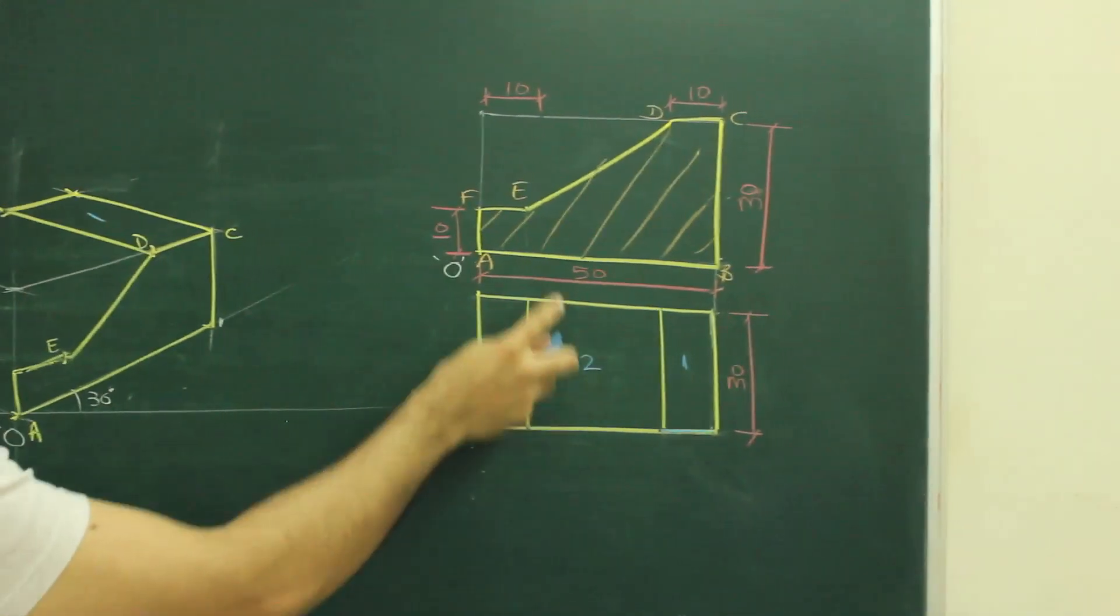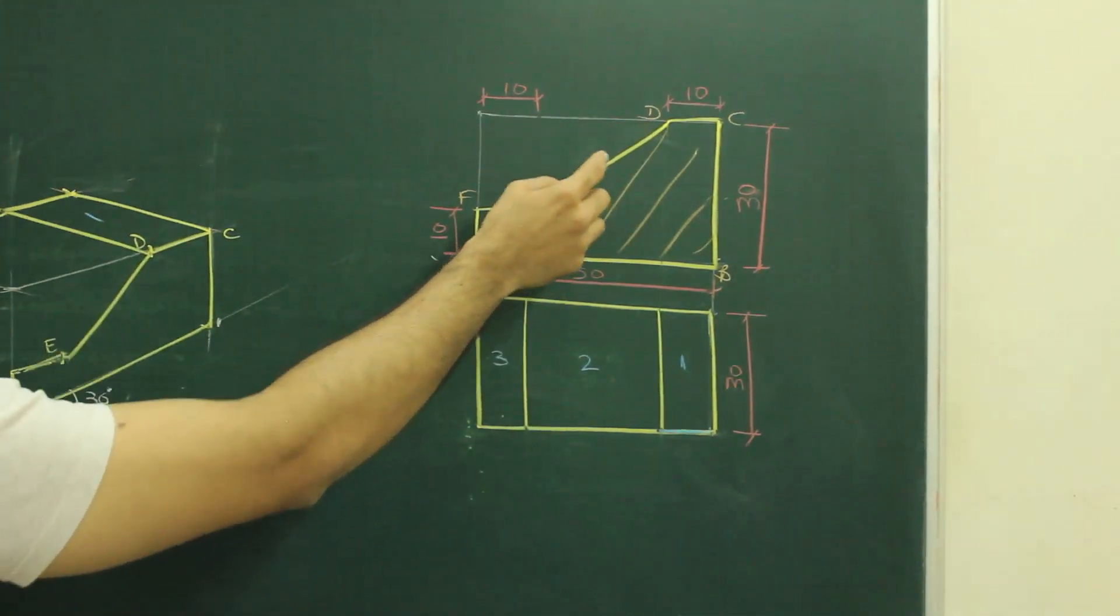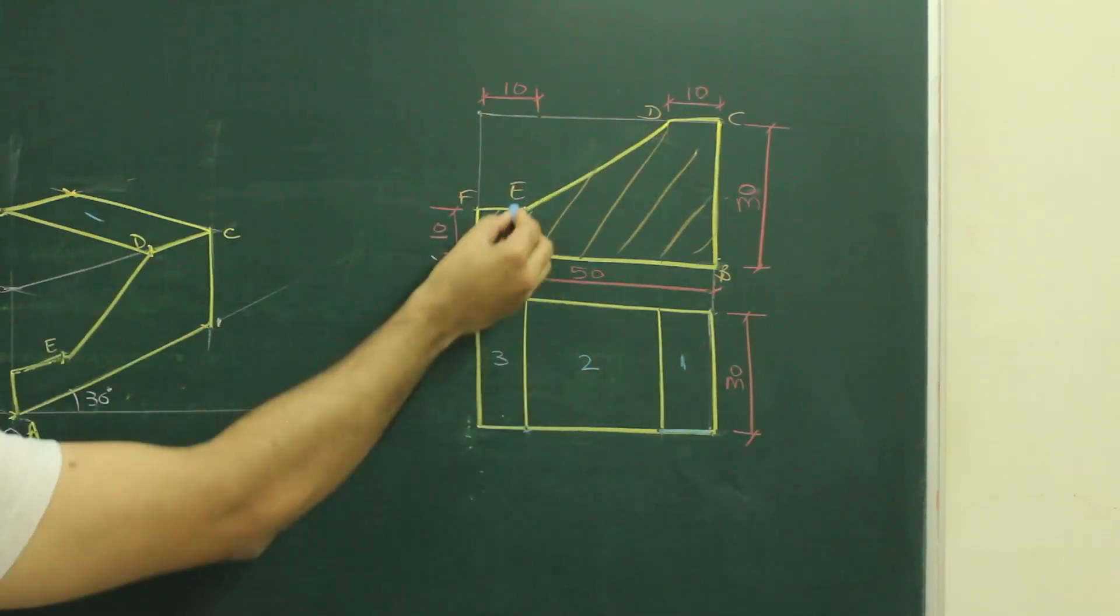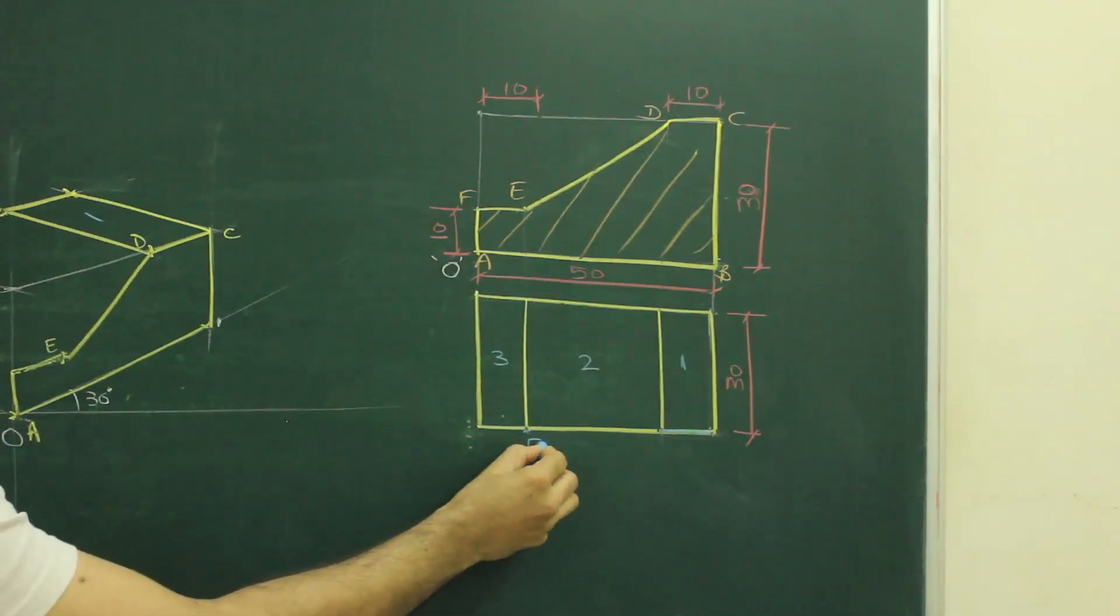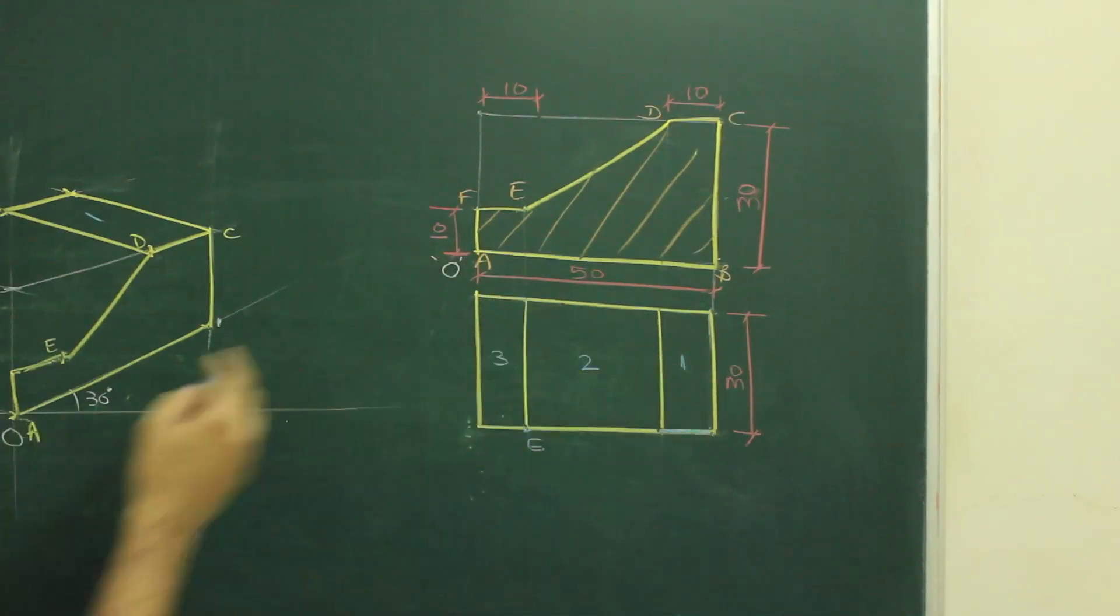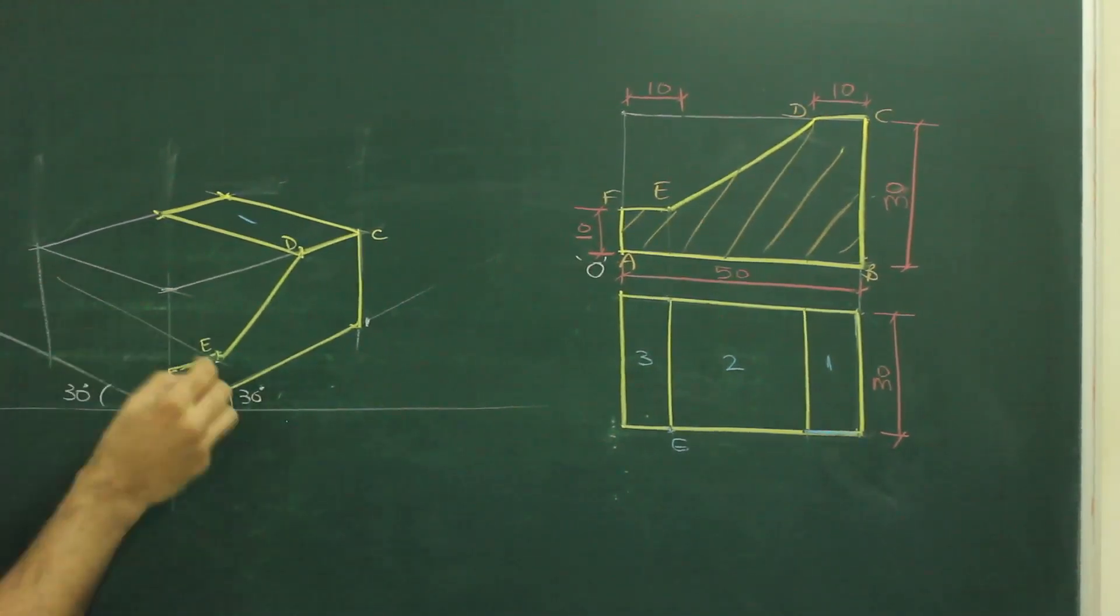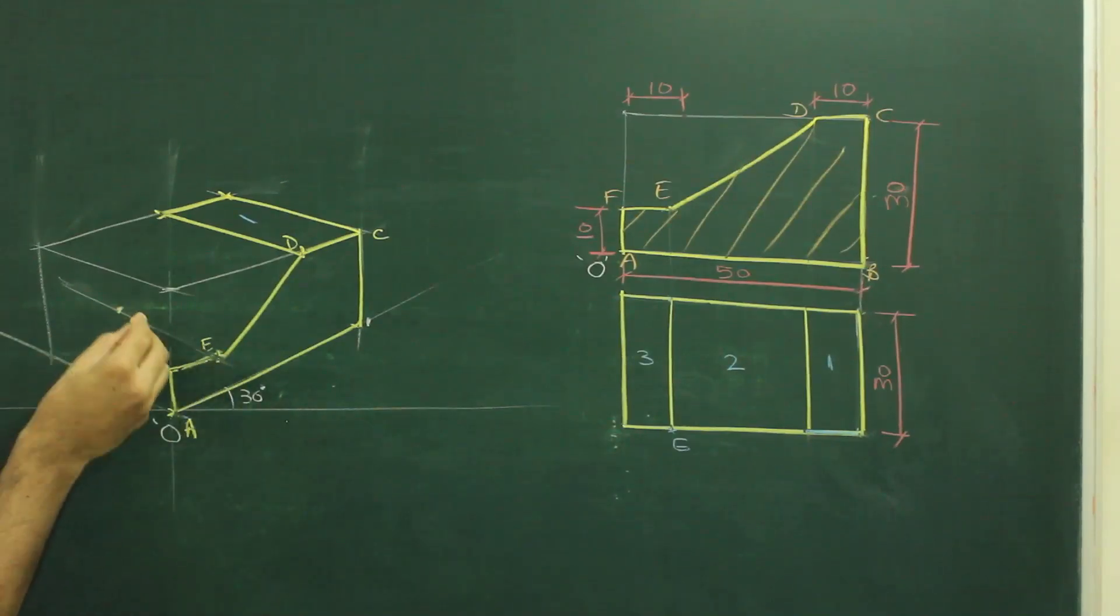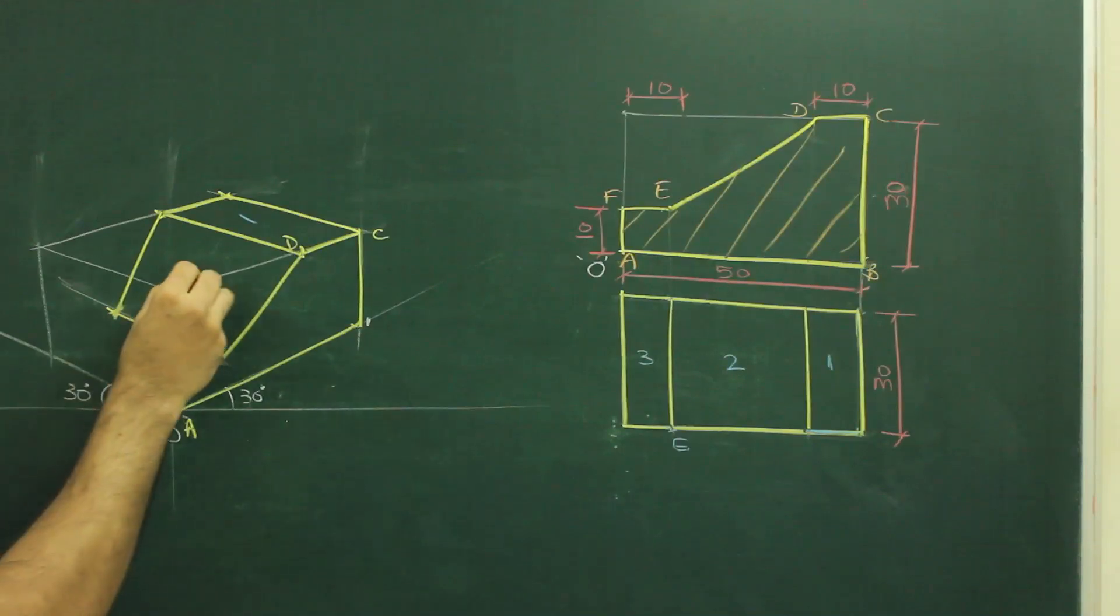Now we need to draw part two, which is incline. Now if you see D is behind, same way E will be also behind. See if in top view, E is here. From here to here, how much it is? 30. So what we need to do, we need to go behind by 30. So you draw a line which is incline at 30 degree, and you mark 30 on this. And after that, we join this to this. So we get part two also.